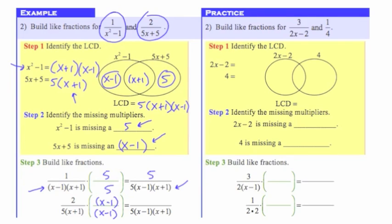That gives us our common denominator on the bottom. In the numerator, I want to go ahead and multiply those things together — we leave the denominator factored, but it's easiest to go ahead and multiply the numerators. When we go to add or subtract, we'll need to combine things together, and that's easier once things are multiplied. So I'm going to distribute the 2: 2 times x gives me 2x, and 2 times negative 1 gives me negative 2.